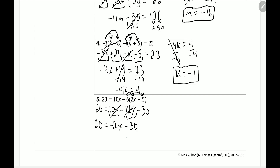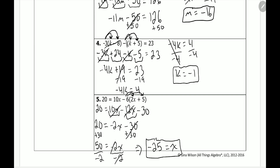We just have to solve this equation. First step: add 30 to both sides. 20 plus 30 is 50, equal to negative 2x. Then we divide by negative 2 on both sides. 50 divided by negative 2 is negative 25, and the negative 2x divided by negative 2 leaves just x. So x is equal to negative 25, and that's our answer.